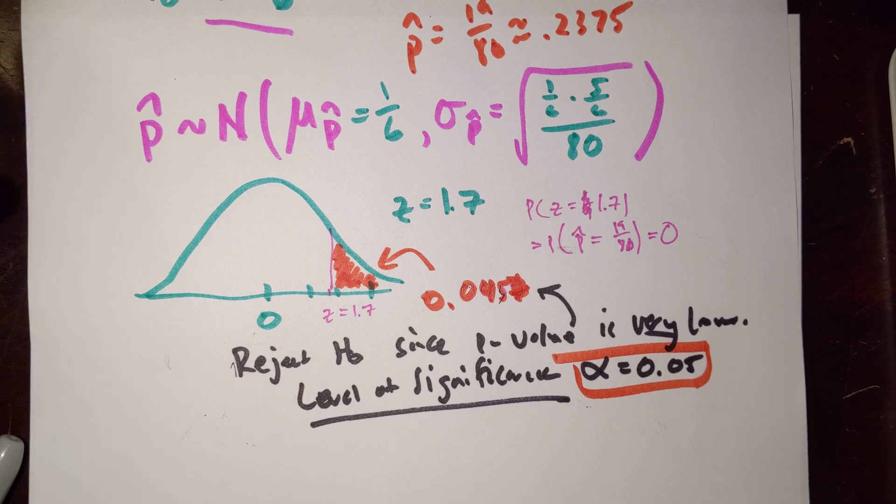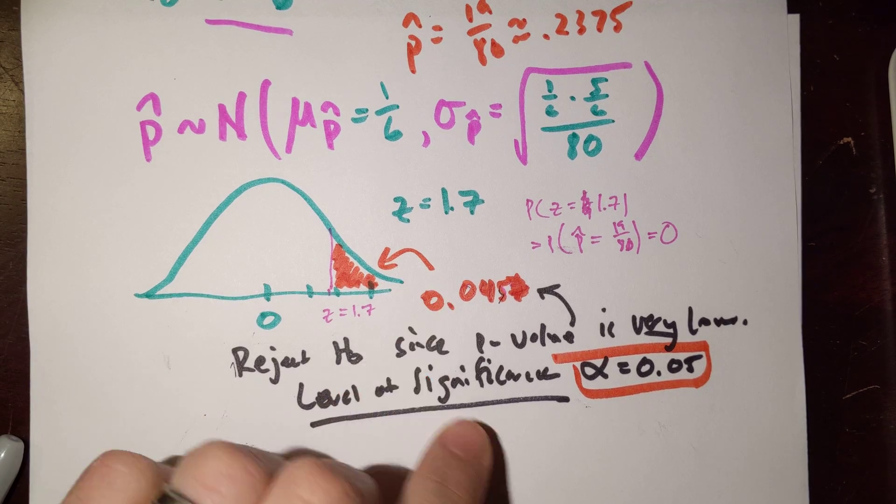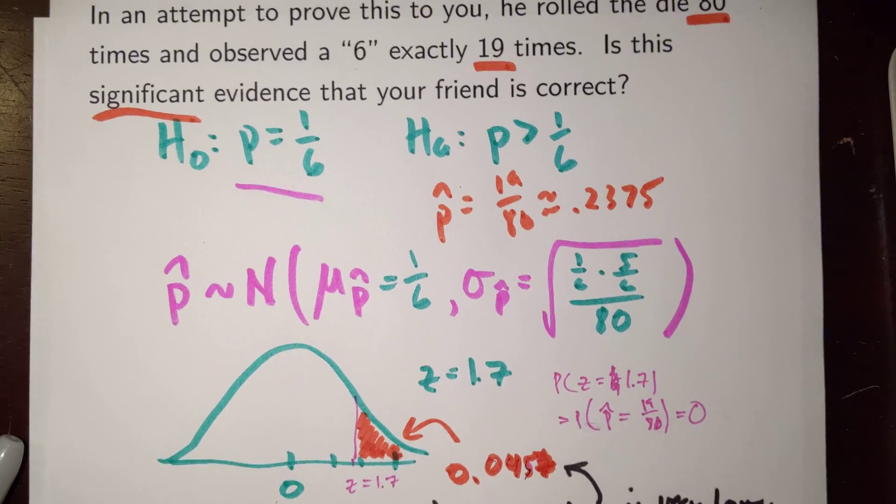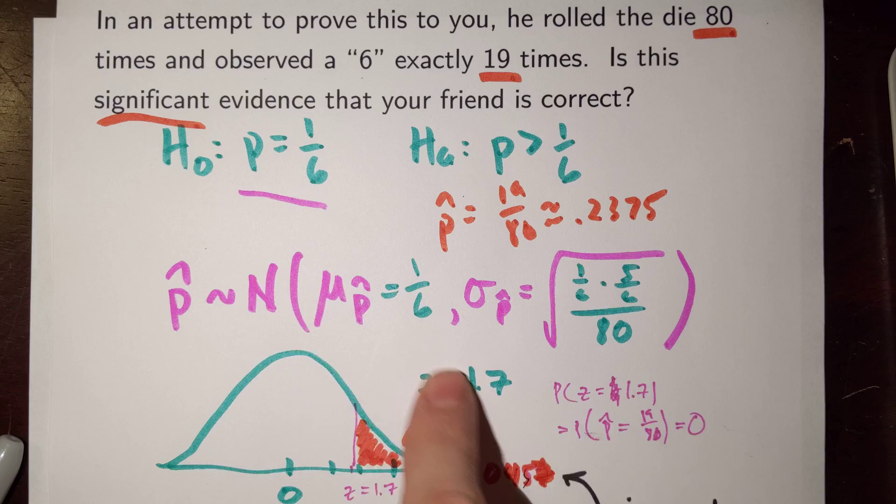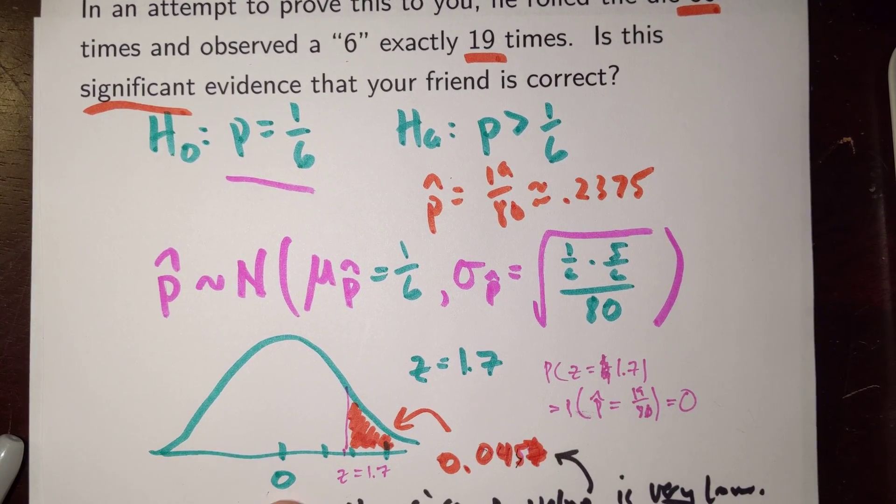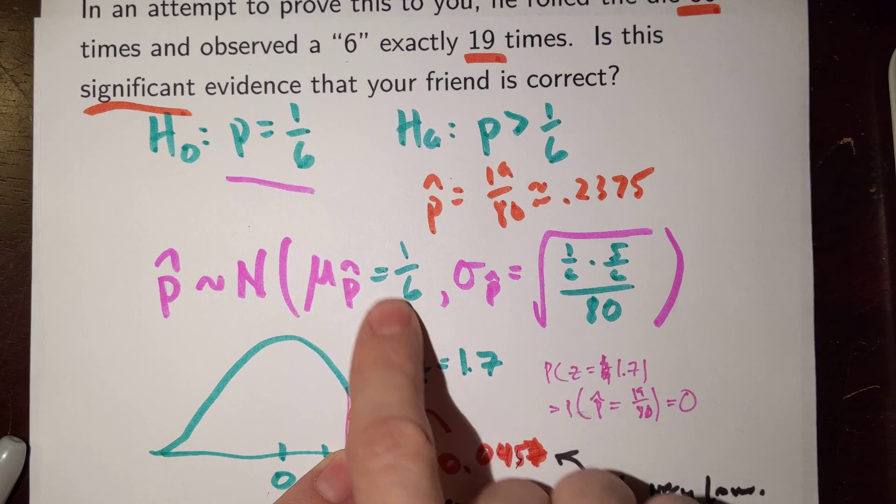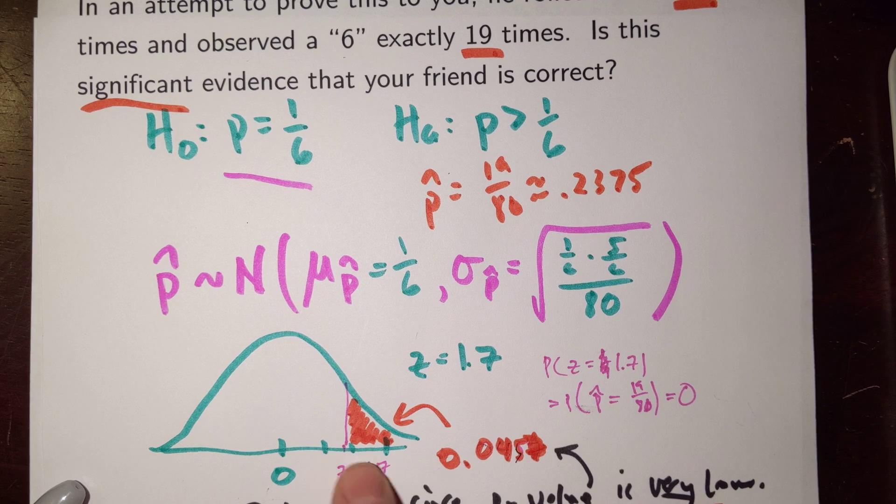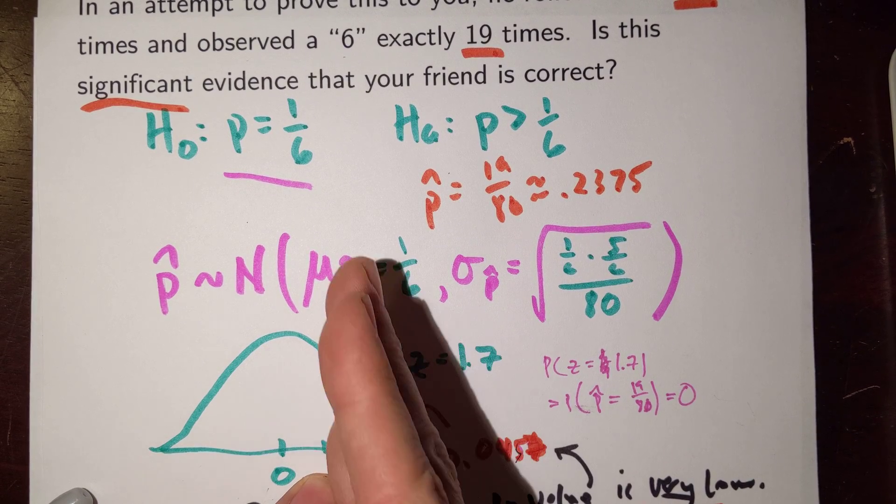So, this was just a specific example where we calculated a p-value. Let's generalize the idea. What was the fundamental idea of the p-value? Well, once again, it involved calculating a probability, a probability that was, in fact, conditional. It was based on the assumption that the null hypothesis is true. We calculated it based on a sampling distribution on that null hypothesis.